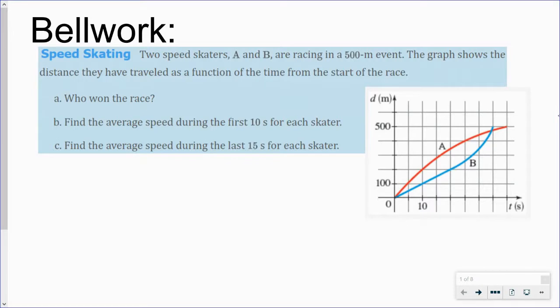Okay, so as we're looking at this, two speed skaters, A and B, are racing in a 500 meter event. The graph shows the distance they have traveled as a function of time from when they started and ended the race. So here we can see distance, here we can see time. They're both traveling 500 meters, and this is the time it takes them. For example, at 10 seconds, B is at 100, but A is at 200 meters.